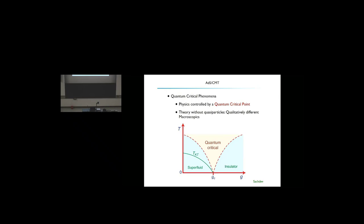The important context for condensed matter is theories where the physics is controlled by a quantum critical point — a specific case where a finite temperature phase transition is pushed to zero temperature by changing a parameter. At zero temperature the nature of the phase transition can change, but the universal behavior still holds. You get a whole quantum critical region where responses are governed by universal critical behavior.